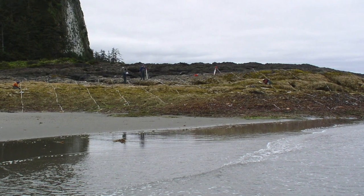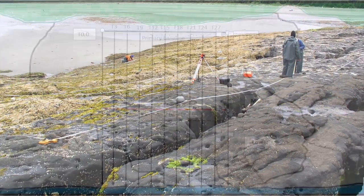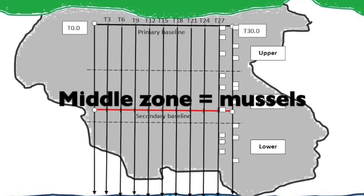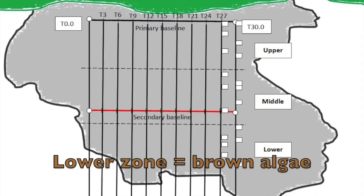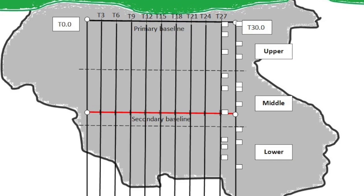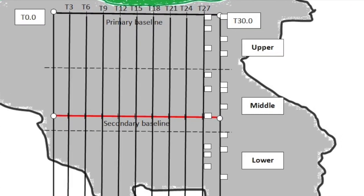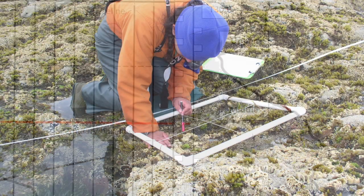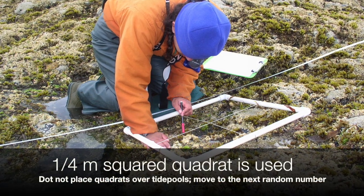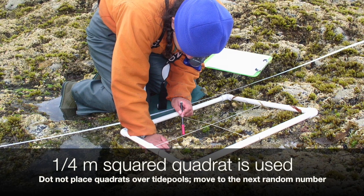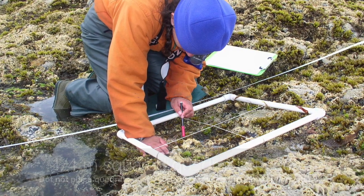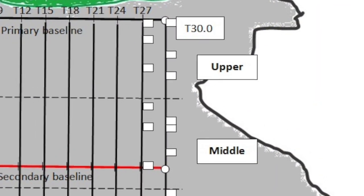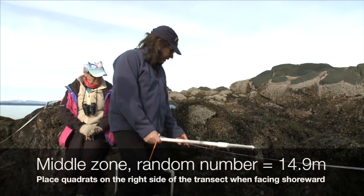Based on the zonation of the organisms, break the study site into three zones: the upper, middle, and lower. The upper zone is dominated by barnacles, the mid zone is dominated by mussels, and the lower zone is dominated by brown algae. Identify all of the non-sessile or mobile organisms within three random quadrat locations within each of the upper, middle, and lower zones of each transect. Place the quarter-meter square quadrats on the right side of the transect when facing shoreward. Quadrats should not be placed over tide pools. Random numbers can be generated before going into the field or via a random number generator app.